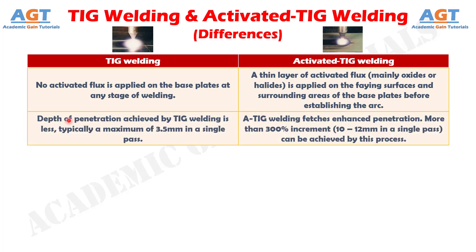Number 2: depth of penetration achieved by TIG welding is less, typically a maximum of 3.5 mm in a single pass, whereas activated TIG welding fetches enhanced penetration. More than 300% increment — about 10 to 12 mm in a single pass — can be achieved by this process.